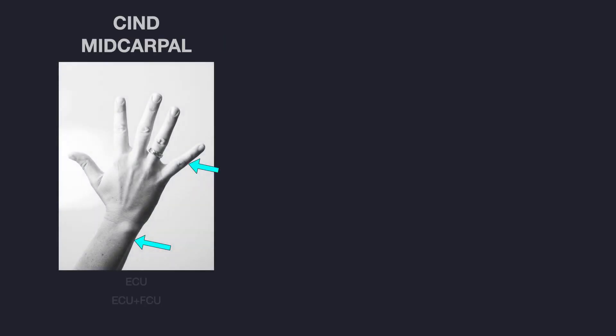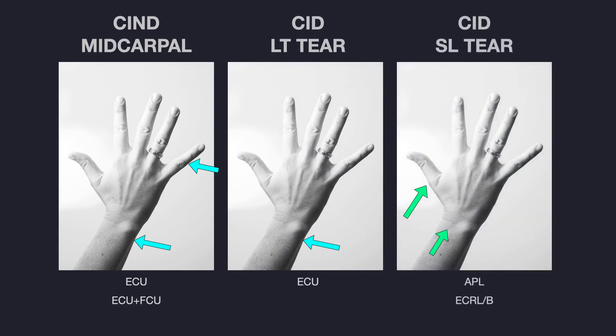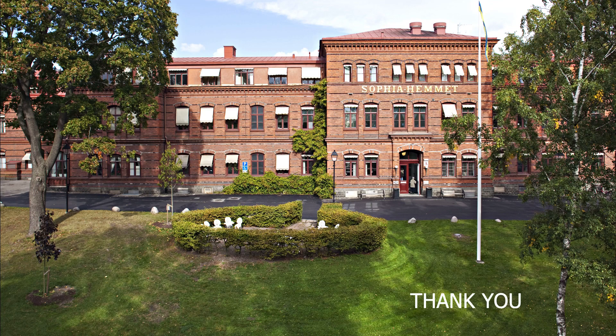In conclusion: for mid-carpal instability, exercise the ECU and perform co-contractions of the ECU and FCU. In LT tears, the ECU should be exercised with the forearm in a neutral position. In scapholunate ligament tears, APL exercises should be performed in forearm neutral and wrist extensors exercised with the forearm in pronation. Thank you very much.